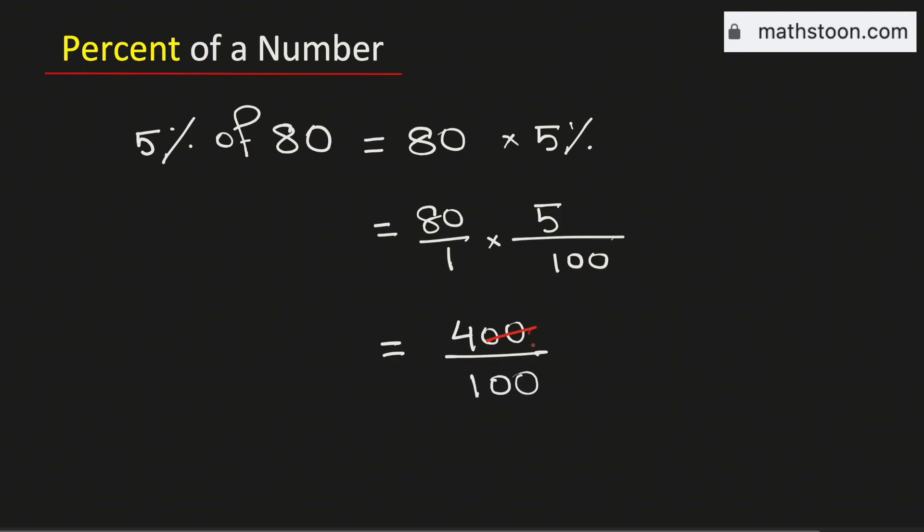If we cancel the common zeros, it becomes 4 over 1, which is the same as 4. Therefore, 5% of 80 is equal to 4, and this is our final answer.